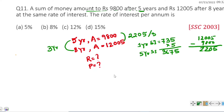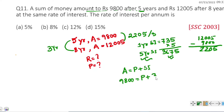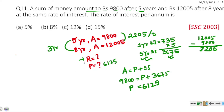Using the formula: Amount = Principal + Simple Interest. The amount is 9800, and the simple interest is 3675. Therefore, Principal P = 9800 minus 3675, which equals 6125. So the principal is 6125.